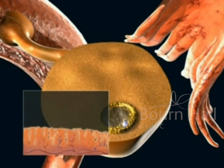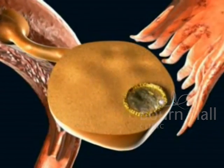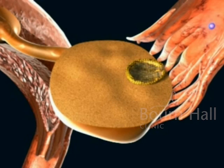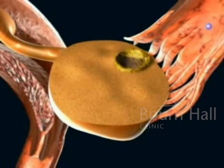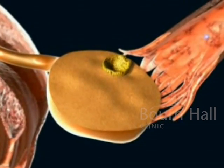The estrogen causes the lining of the uterus, the endometrium, to thicken. Around day 12 to 14 of the cycle, the follicle has grown to a size of about 21 millimeters. The rupture of the follicle ensues, which is called ovulation, and the mature ovule is released.